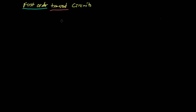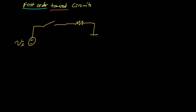For our first order transient circuit, we're going to look at this circuit. I've got a voltage source VI for V-in. Then I'm going to have a switch along with one resistor and one capacitor. So I've got a switch right here, this is my resistor R, and this is my capacitor C.